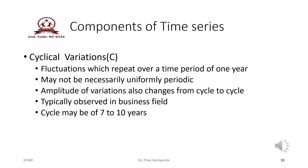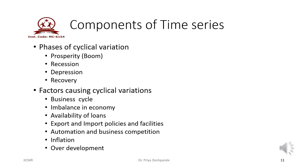The third important component of time series is cyclical variation. Cyclical variation causes fluctuation which repeats over a time period of more than one year. The cyclical variation may not necessarily be uniform in period, and the amplitude of variation also changes from cycle to cycle. Cyclical variations are typically observed in the business world, and commonly the cycle may be of 7 to 10 years. The phases are: prosperity (also known as boom), recession, depression, and recovery.